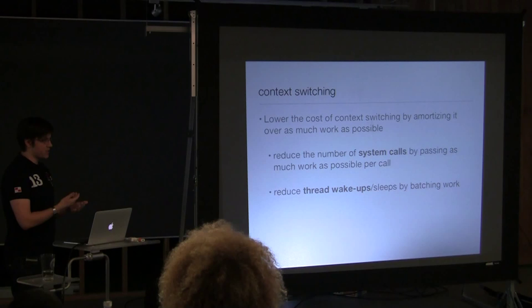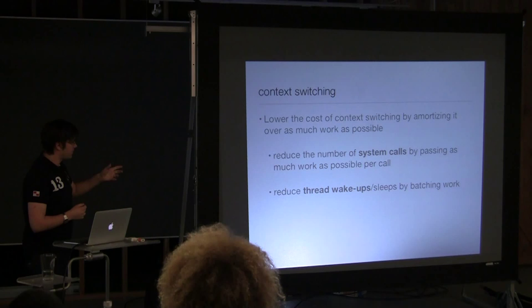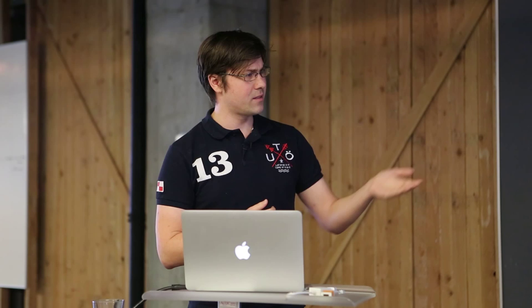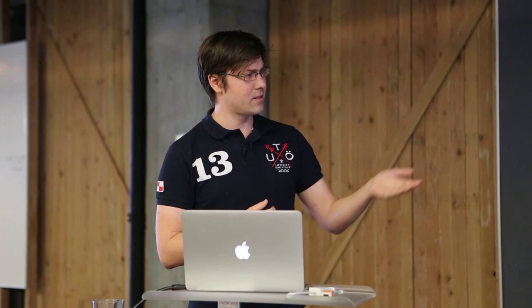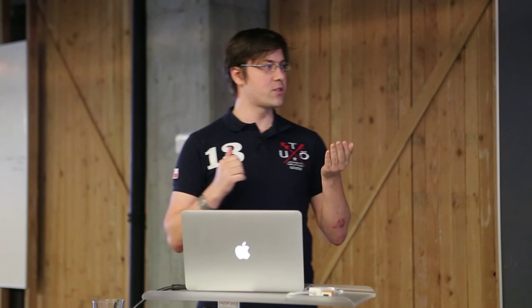So what can you do to avoid these kinds of context switches? You want to amortize the cost of the context switch over as much work as possible. So this means in the two cases of system calls and thread switches pass as much data as possible into every system call so that you don't have to make multiple system calls. And try to batch your work so that you can have fewer thread wake-ups and thread sleeps by doing more work.